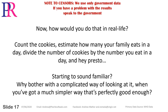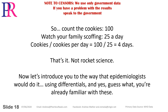How would you do that in real life? Count the cookies, estimate how many your family eats in a day, divide the number of cookies by the number you eat in a day — and hey presto. Why bother with a complicated way of looking at it when you've got a much simpler way that's perfectly good enough? Count the cookies: 100. What's your family scoffing? 25 a day. Cookies divided by cookies per day equals 100 over 25 equals 4 days. Not rocket science.